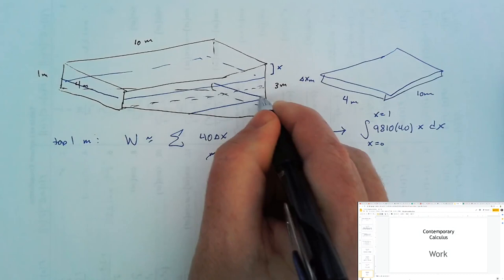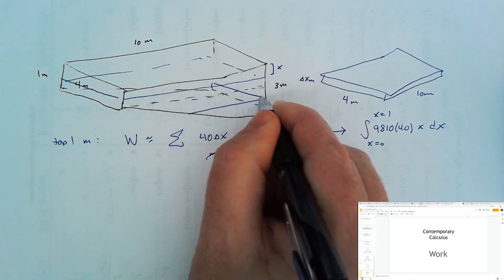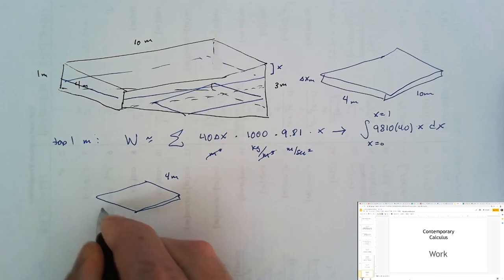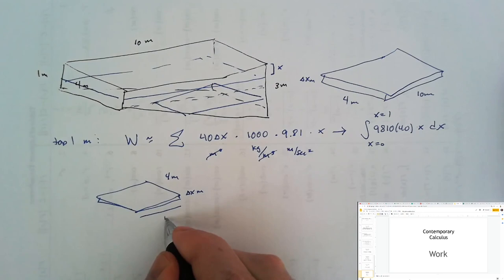But for the rest of the water in the pool, these rectangular slices of water are not all the same dimension. They're still all 4 meters wide. They would still all be delta x meters deep. But this length right here is going to change with the depth.